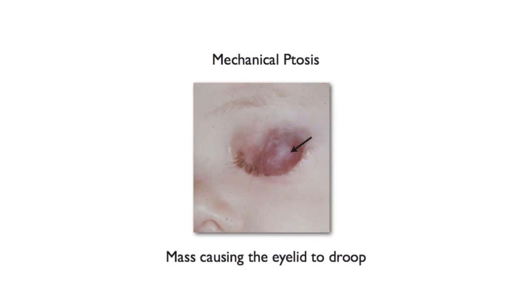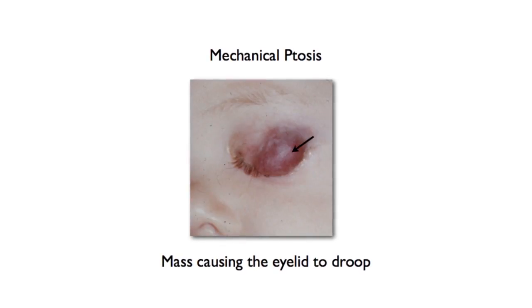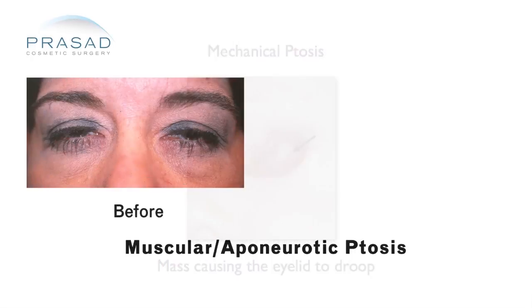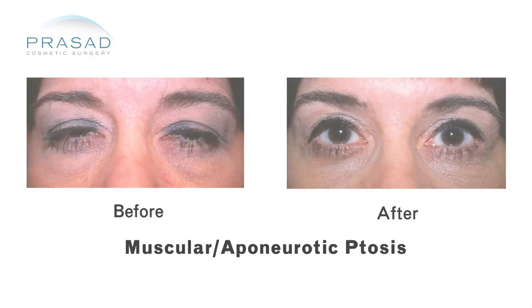Acquired ptosis can be caused by a physical volume or tissue over the eyelid, and is referred to as mechanical ptosis. A more common cause is muscular or aponeurotic ptosis, which is essentially a stretching and thinning of a part of the levator muscle.